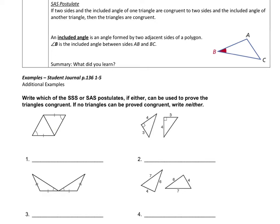Now we have this situation and we have to write whether these triangles can be proven congruent by side side side or side angle side. For the first one, we have these two triangles. This shared side will be congruent to itself by reflexive. So I've got a situation where I have this angle and these two sides.